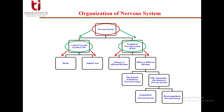The motor division can be further subdivided as the voluntary — that is the somatic nervous system — or the involuntary — that is the autonomic nervous system. Finally, the autonomic nervous system is further divided into the sympathetic or the parasympathetic type. This was the complete organization of the nervous system.